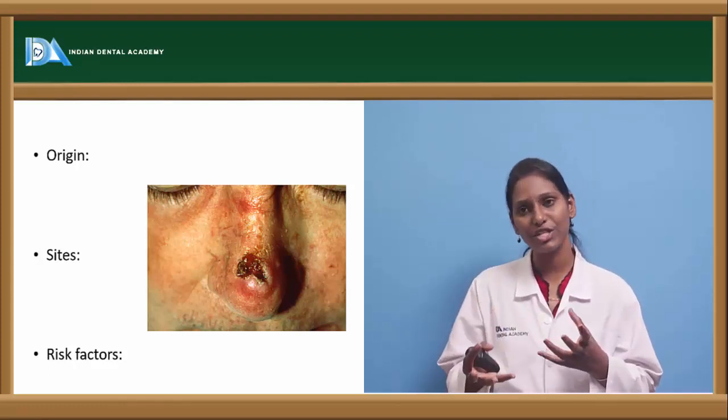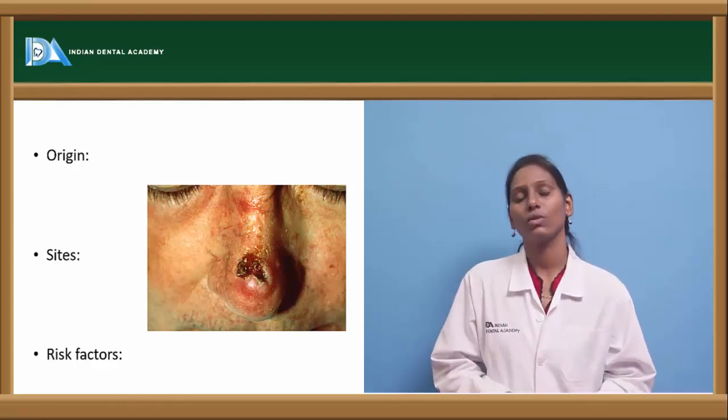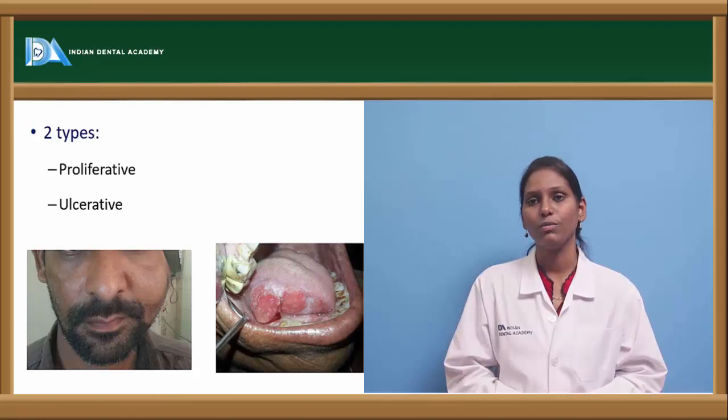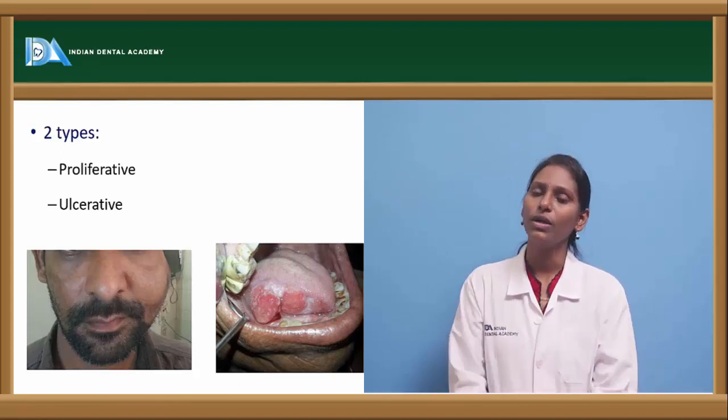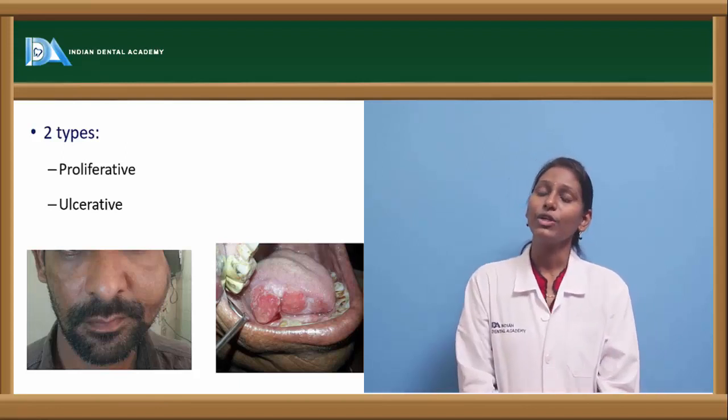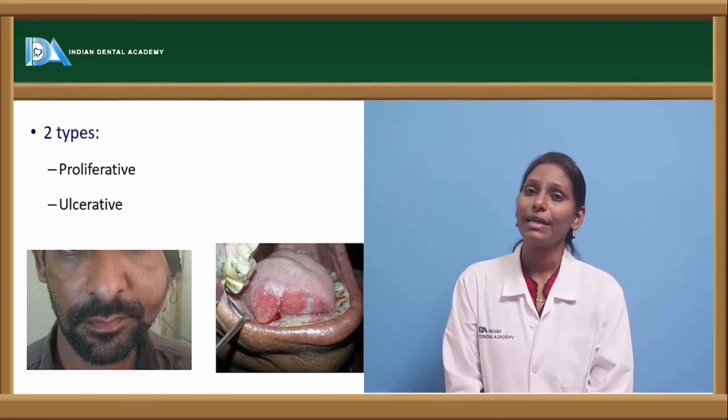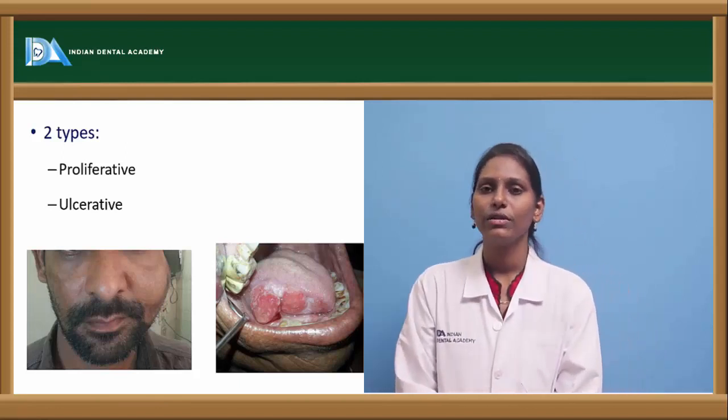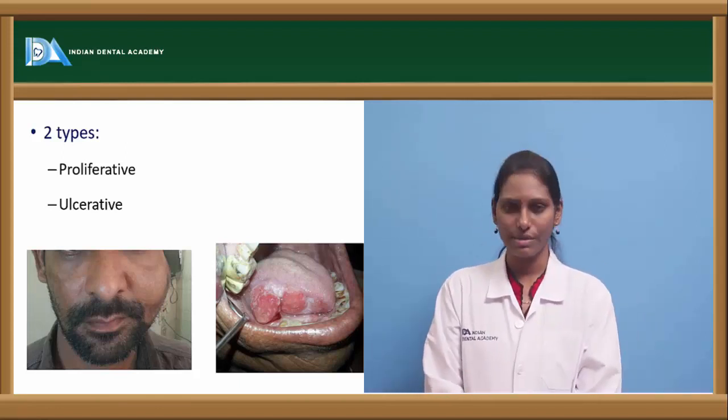Other risk factors for squamous cell carcinoma include actinic keratosis, Bowen's disease, lupus vulgaris, syphilitic glossitis, and lentigo maligna. Long-standing syphilitic infection of the tongue can turn malignant. These are various infections that can also cause squamous cell carcinomas.